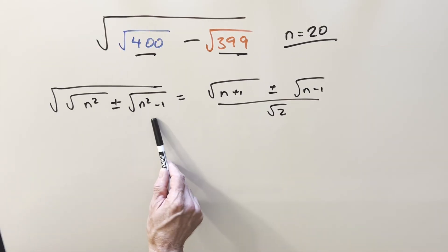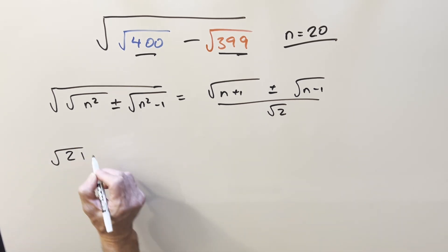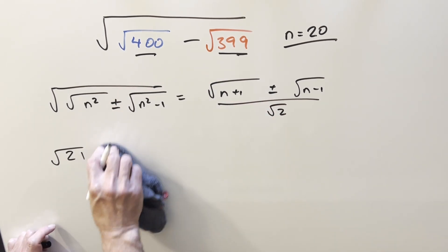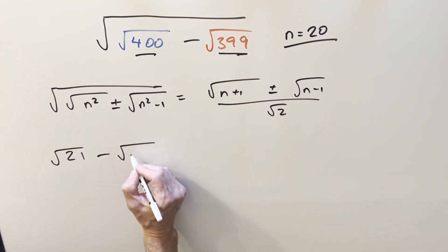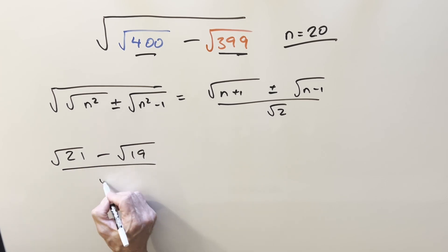So now we get to go ahead and use the formula and just plug in 20. We'll plug in here, it's going to be square root of 21 plus, well actually, the plus or minus needs to match our problem. So it's going to be square root 21 minus square root 19 over square root of two. And that's it.